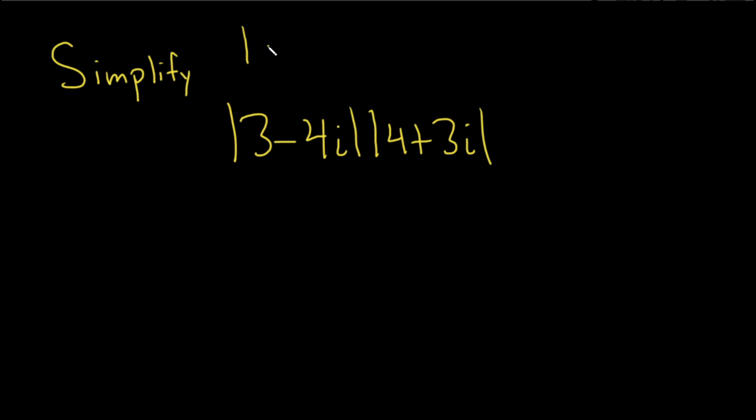So if you have a complex number, a plus bi, the modulus is equal to the square root of a squared plus b squared. This is called the modulus of a complex number.